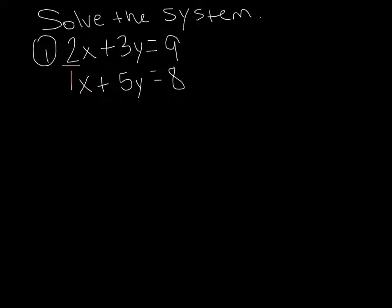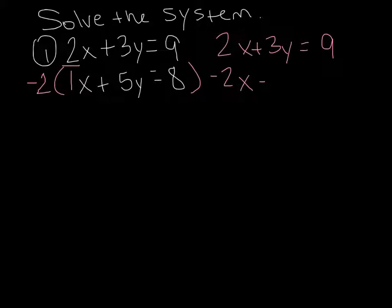Well, you need negative 2. So I need to multiply the bottom to make this 1 into a negative 2. You ask yourself, 1 times what is negative 2? Negative 2. So we're going to multiply the entire bottom equation by negative 2. We're not going to do anything to the top equation, so I'm just going to rewrite it. 2x plus 3y equals 9. And every single thing on the bottom is going to be multiplied by negative 2. So we'll have negative 2x minus 10y equals negative 16.